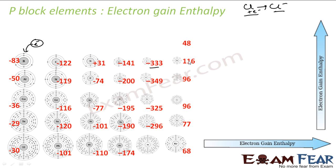For noble gases, the electron gain enthalpy value is positive — meaning you need to supply energy to make them accept an electron. Fluorine has the highest negative value, meaning fluorine releases the maximum energy when it accepts an electron, compared to all the halogens.